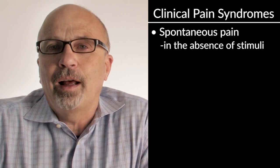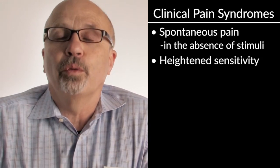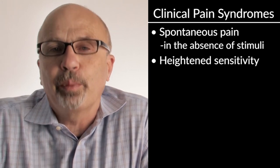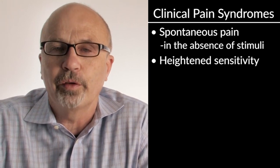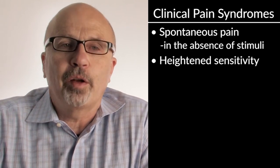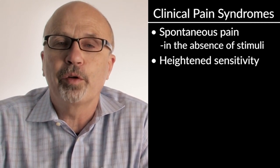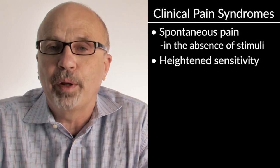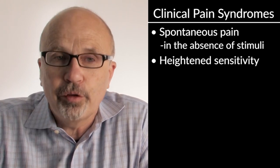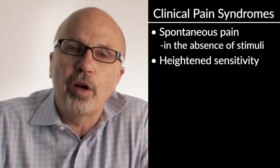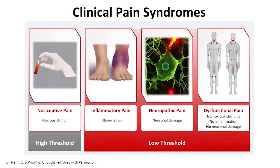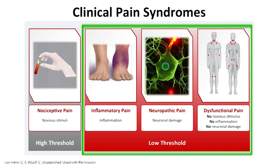Another major feature is heightened sensitivity. Normally, to feel pain we need to be exposed to an intense or damaging noxious stimulus, whereas in patients a stimulus that would normally produce an innocuous sensation — such as light touch, pressure, or movement of a joint — can now be intensely painful. A big mechanistic feature of how pain is generated is understanding this transition from high-threshold nociceptive pain to low-threshold clinical pain syndromes, because this hypersensitivity is the feature that makes pain so difficult for our patients.